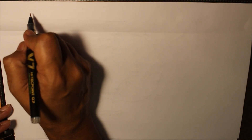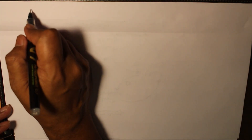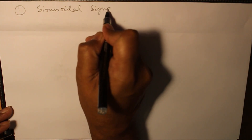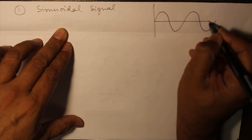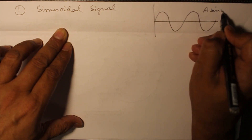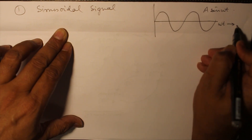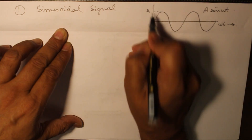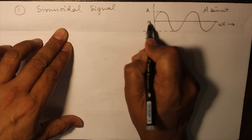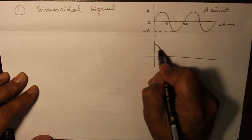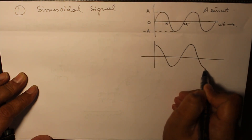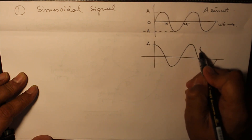After having finished the basic kind of signals, let us see what are the other kinds of signals that we come across. The first is the sinusoidal signal, which is represented by A sin(ωt), where A is the amplitude. Or if it is a cosine function, then it is A cos(ωt).